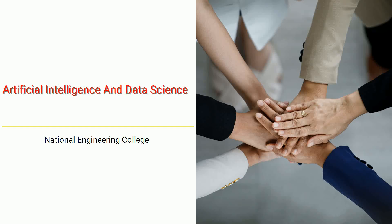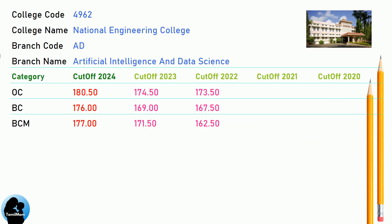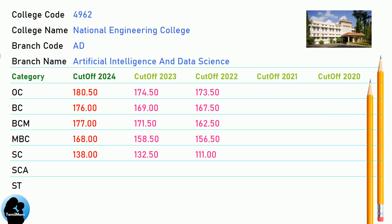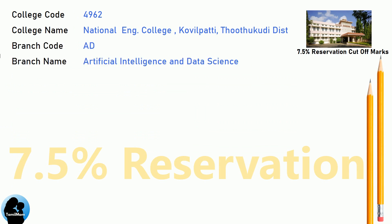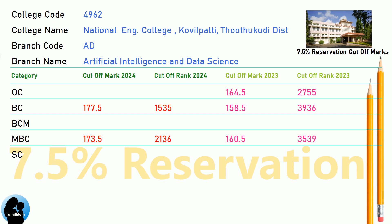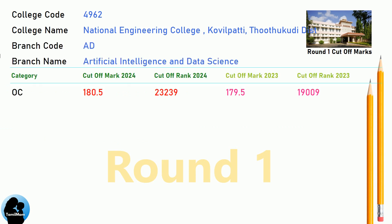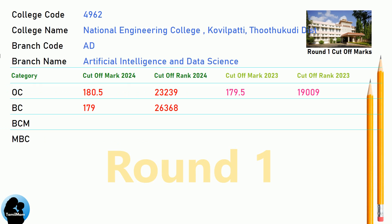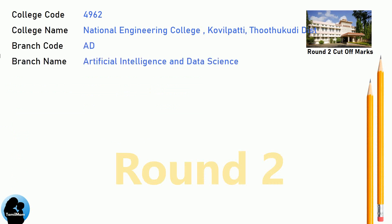DNA cut-off for National Engineering College in Artificial Intelligence and Data Science. DNA 7.5 Reservation cut-off for National Engineering College in Artificial Intelligence and Data Science. DNA Round 1 cut-off for National Engineering College in Artificial Intelligence and Data Science. DNA Round 2 cut-off for National Engineering College in Artificial Intelligence and Data Science.